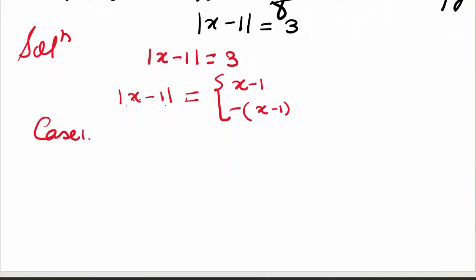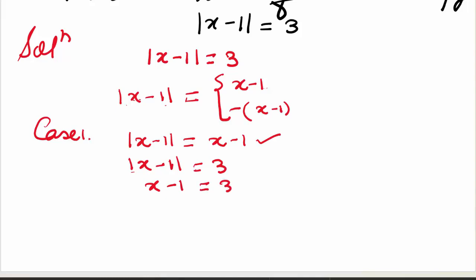So let's come to case 1. In the first case, we take mod of x minus 1 is equal to x minus 1. Now come to the question — we are given mod of x minus 1 is equal to 3. We'll get x minus 1 is equal to 3, which implies x is equal to 4. So we have the first case.